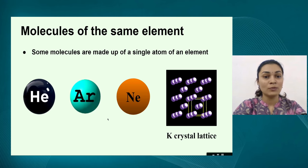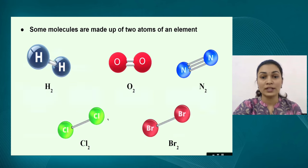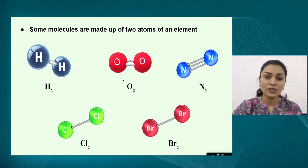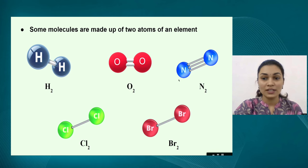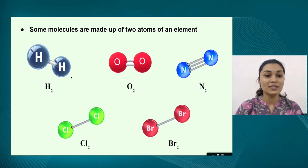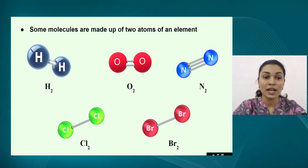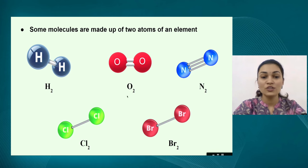The next category is when the molecule is made up of two atoms. We have a lot of examples on the screen — most of them are gases. We have hydrogen, oxygen, nitrogen, chlorine and bromine. All these molecules have two atoms and they are both of the same element. Hydrogen molecule is made up of two hydrogen atoms; oxygen molecule is made up of two oxygen atoms, and so on.